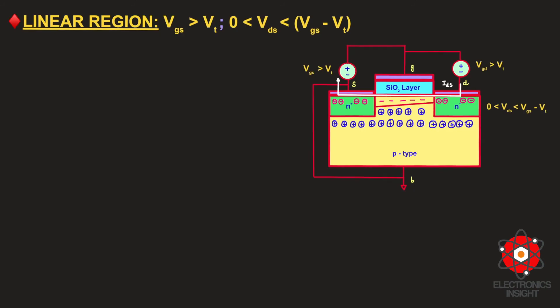Now that we understand how to estimate the gate capacitance, our ultimate aim is to obtain the drain-to-source current for the linear region and then for the saturation region. For the linear region, VGS must be greater than VT and VDS is relatively small. Under these conditions, IDS increases almost linearly with VDS, just like an ideal resistor, and electrons accumulate below the gate to form a conducting channel.